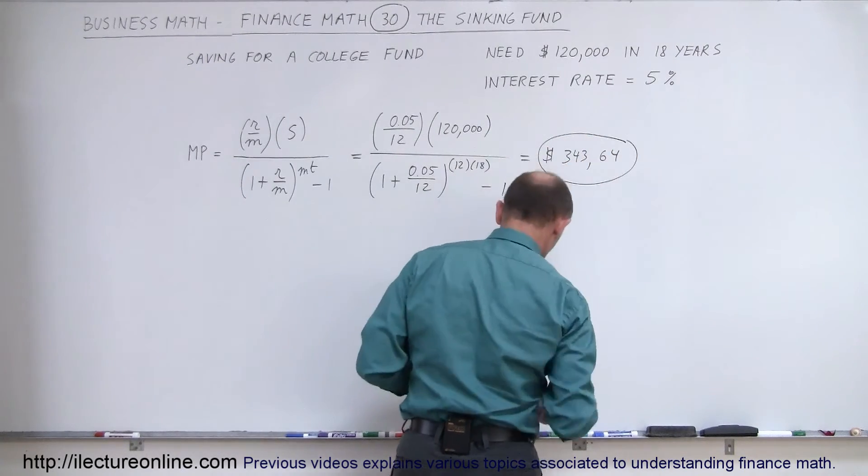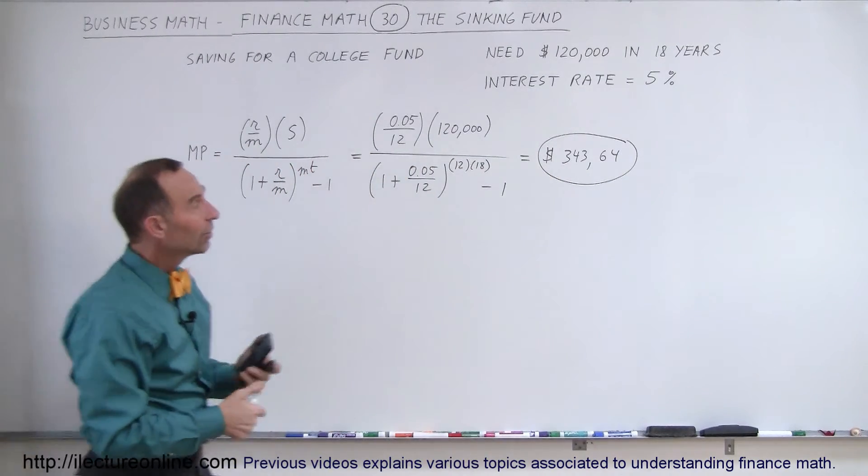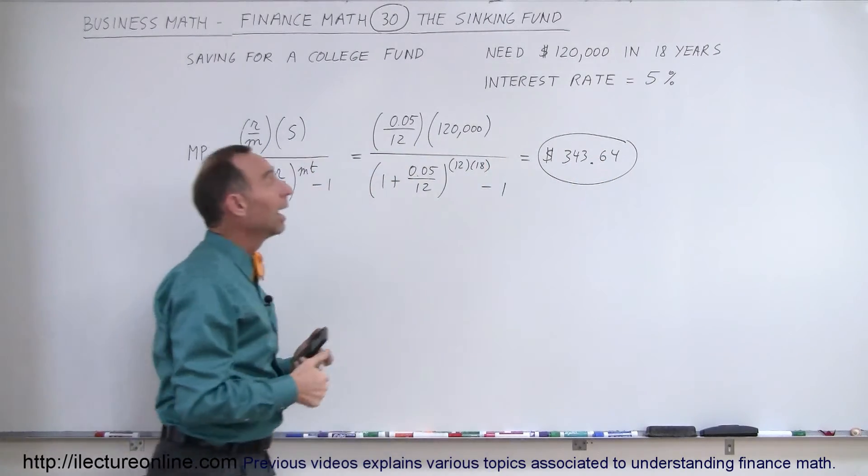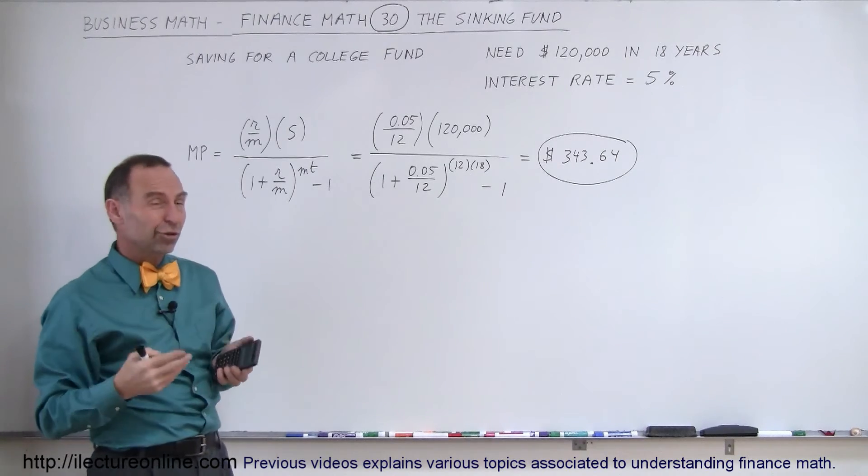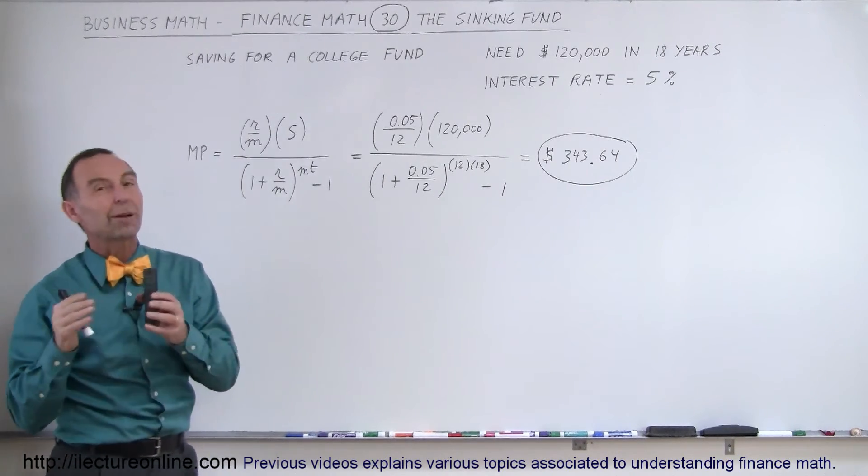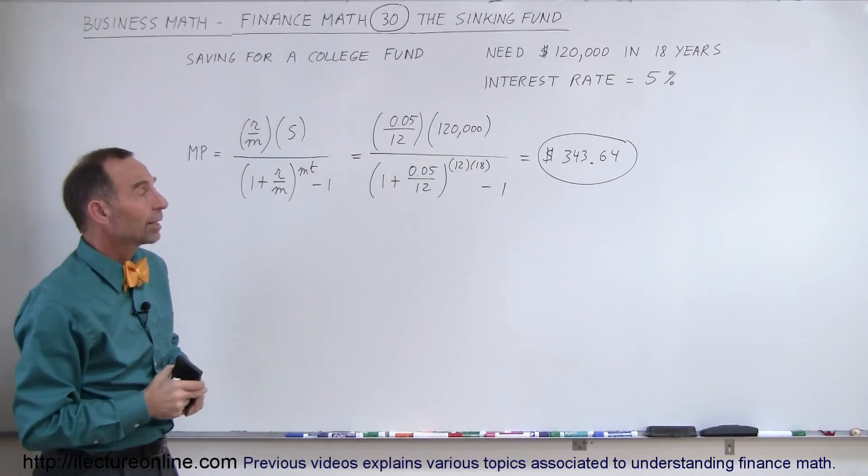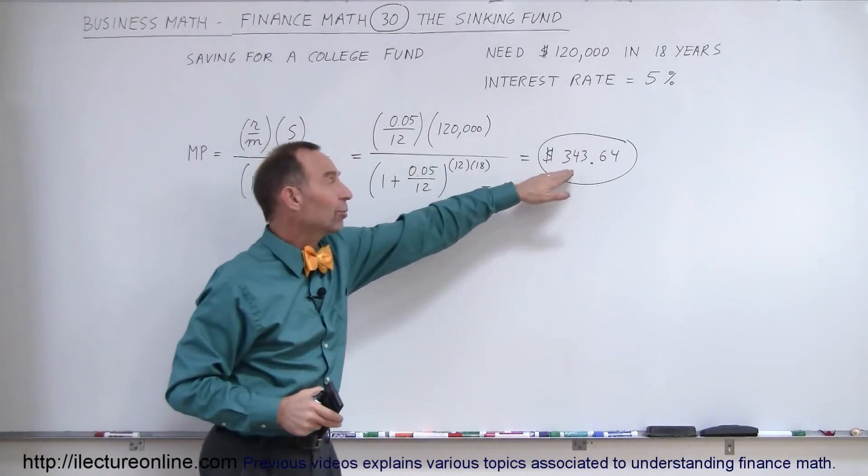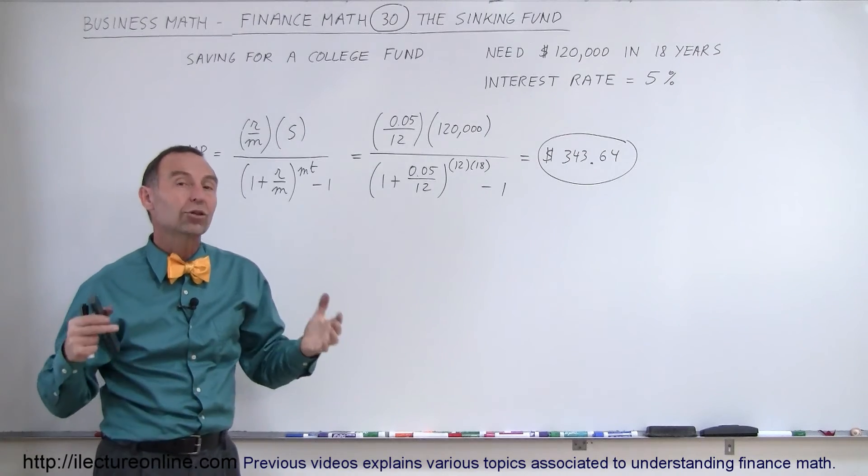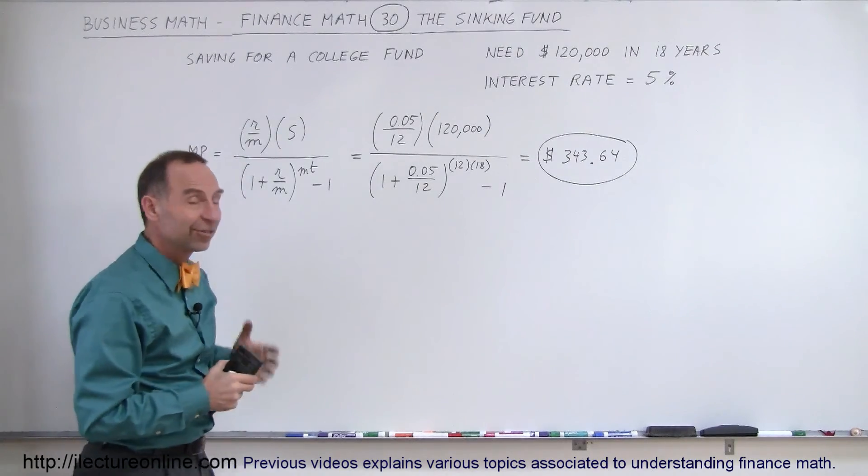So if you know that you can have an investment where you can be earning 5%, and if you are pretty certain you're going to get a 5% rate of return on your investment, of course not by putting in the bank and getting interest on your money, but maybe by buying bonds, municipal bonds or something like that, if you then invest $343.64 every month, at the end of 18 years you'll have $120,000 in the bank ready to pay for college. And that's how we do that.